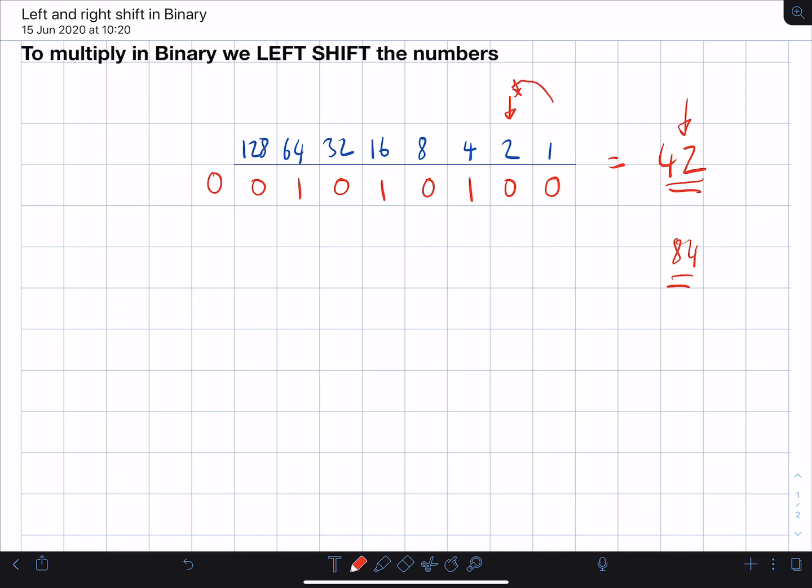So we've times that original number by 2 by doing a left shift of 1. Left shift of 1, we've moved the numbers along to the left once. Now I'm just going to undo here and we'll go back to where we had before. There's our original numbers, there's 42. Now, let's say rather than multiplying by 2, this time we want to multiply by 4. So no prizes for guessing here. Previously, we did a left shift of 1 to double the number.